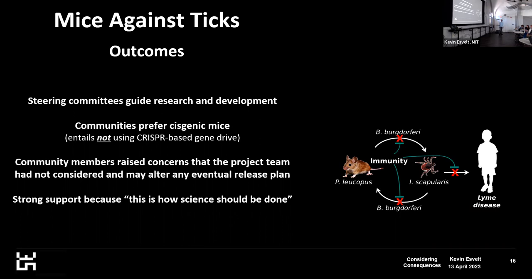Above all, there are a lot of people who support this project not because they really like the idea of engineering the mice — some of them strongly dislike it, they don't think we should be engineering wild animals for any reason — but they strongly support the project because they think this is how science should be done. And if they don't support this kind of thing when scientists come and say we should do this, how can they really say they want science to be done that way? So they support the process, even though they're going to vote against releasing the mice.